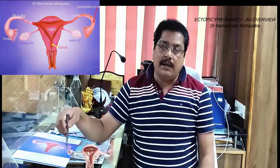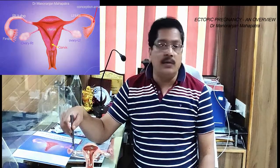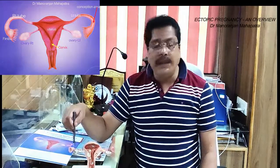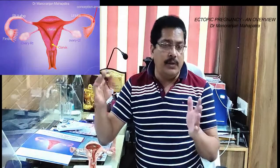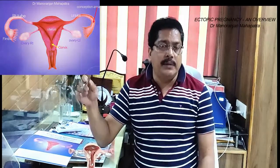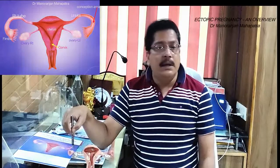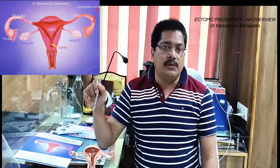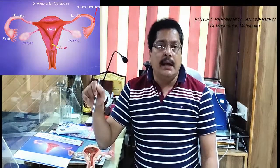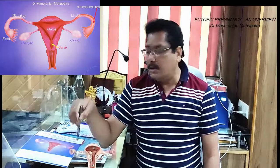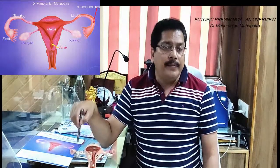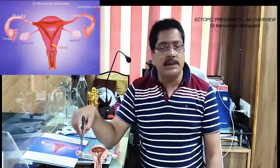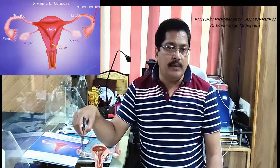That egg is taken to the third part of the tube. During that time, within 24 to 48 hours of the egg release, if the sperm are available, the sperm penetrates into the egg and fertilization occurs in this third part of the tube. The first conception occurs in this third part of the tube.